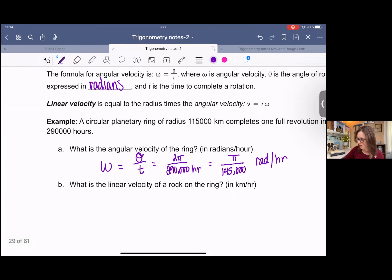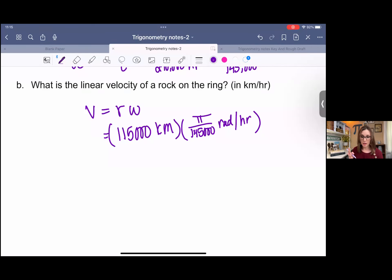And then what is the linear velocity of a rock on the ring? For linear velocity, we take V equals radius times angular velocity. Our radius is 115,000 kilometers times our angular velocity pi over 145,000 radians per hour. If we were to keep this in exact form, which means keep the radian, we would multiply the numerator 115,000 pi kilometers. And then the denominator would be 145,000 hours.